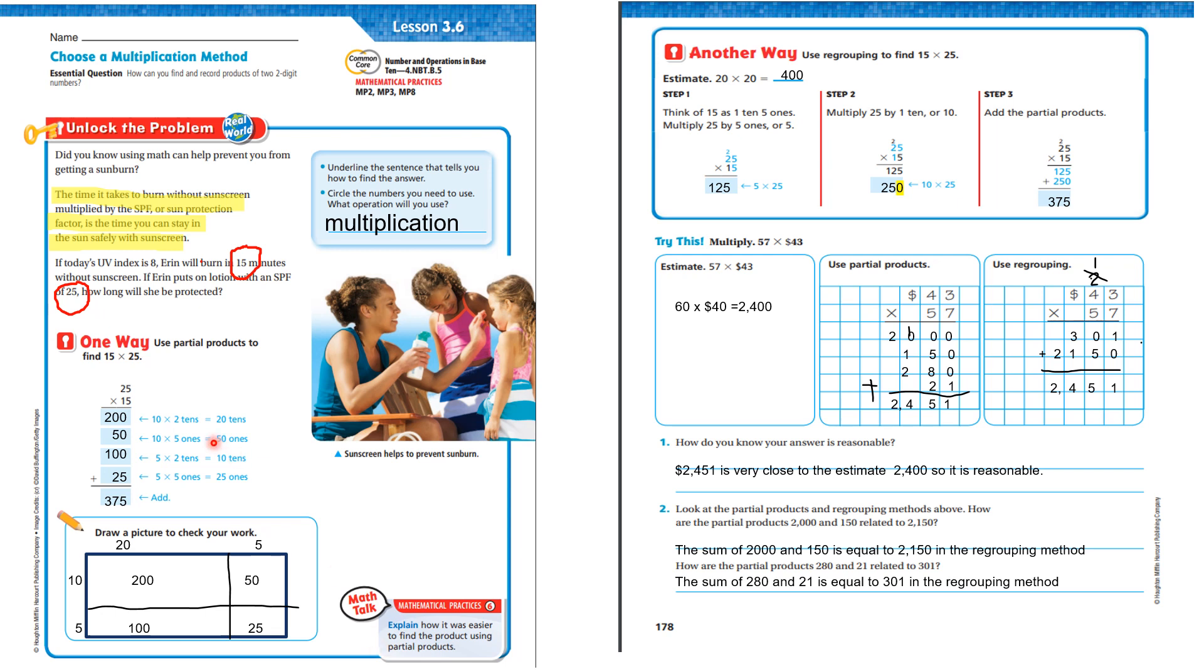First, we're going to use partial products to find 15 times 25. Start with the 10 times two 10s. One 10 times two 10s is 20 10s, that's 200. Now, we're going to go to the 10 again and multiply it by five 1s. A 10 times five 1s is 50. Now, we're coming to the next column. Five 1s times two 10s is 10 10s, and that's 100. Five 1s times five 1s is 25. The answer is 375.